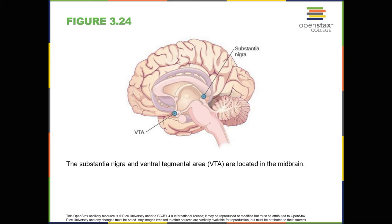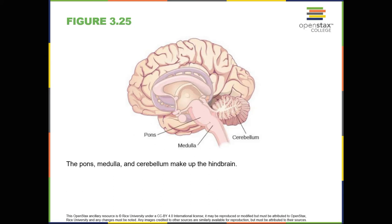Both regions contain cell bodies that produce the neurotransmitter dopamine, and both are critical for movement. Degeneration of the substantia nigra and the VTA is involved in Parkinson's disease. In addition, these structures are involved in mood, reward, and addiction. The hindbrain is located at the back of the head and looks like an extension of the spinal cord. It contains the medulla, pons, and cerebellum, as shown in figure 3.25.